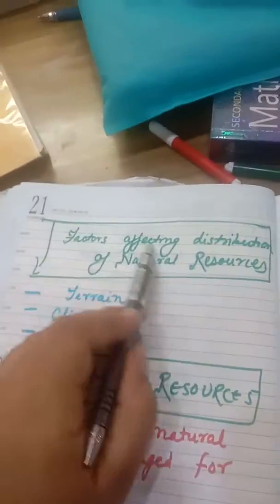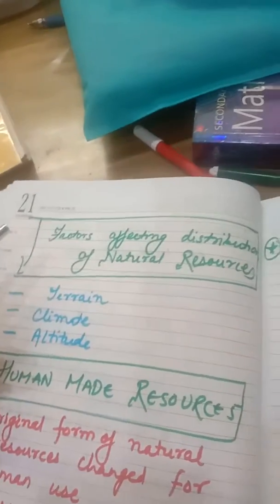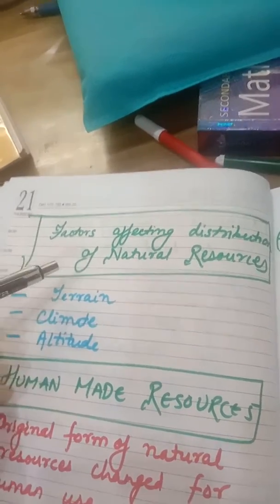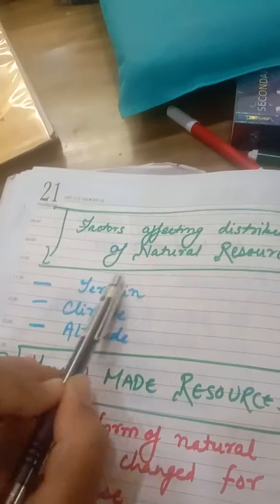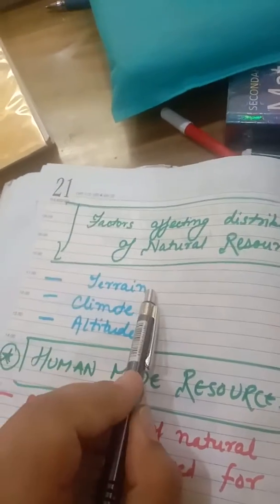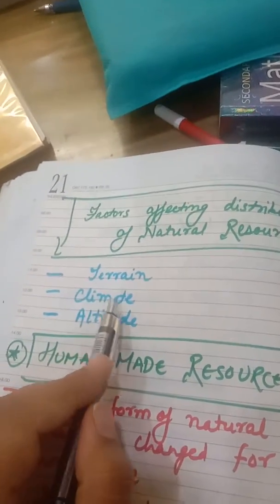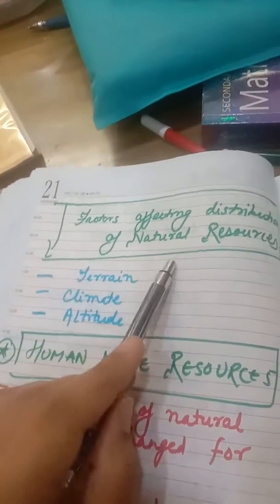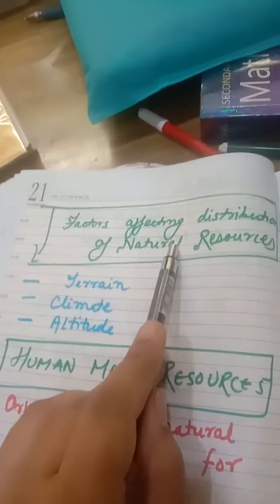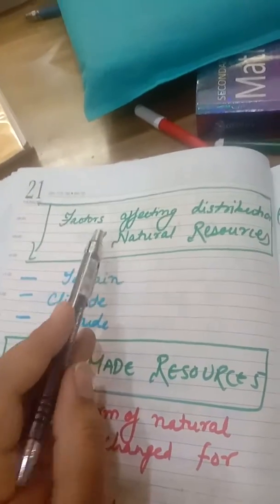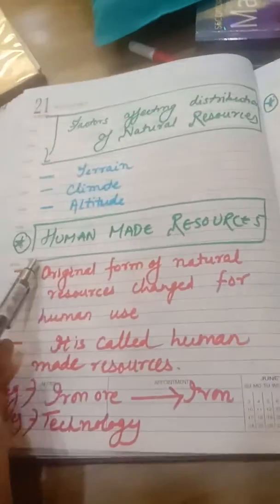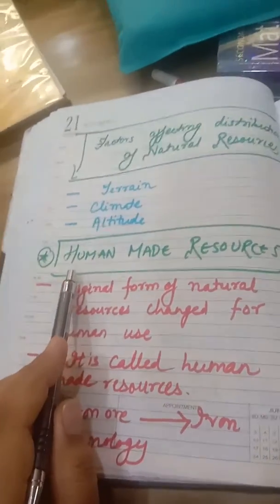Now, what are the factors which affect the distribution of natural resources? Natural resources are distributed in different quantities at different places because of two to three factors: the terrain of a place (i.e., the land), the climate of a place, and the altitude of a place. These affect the distribution of natural resources, which is why natural resources are found in different quantities in different ways at different places.